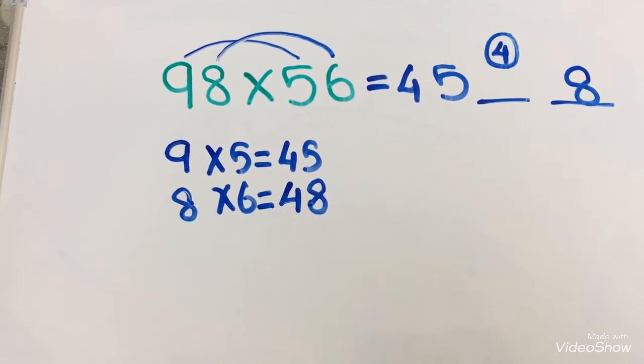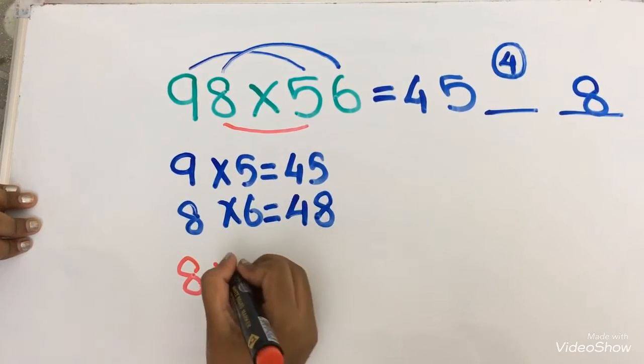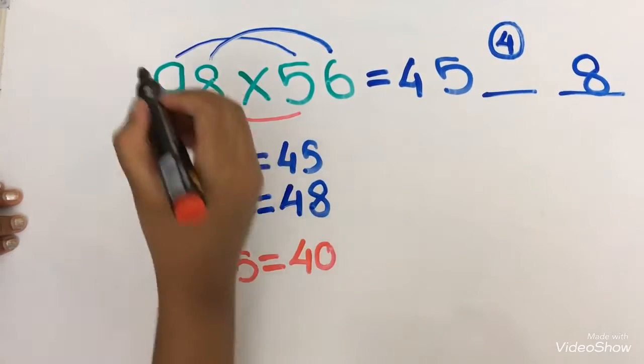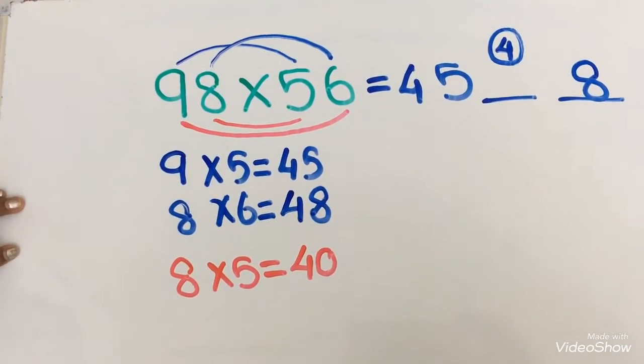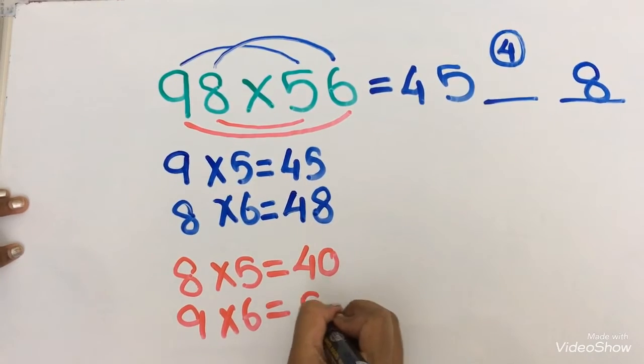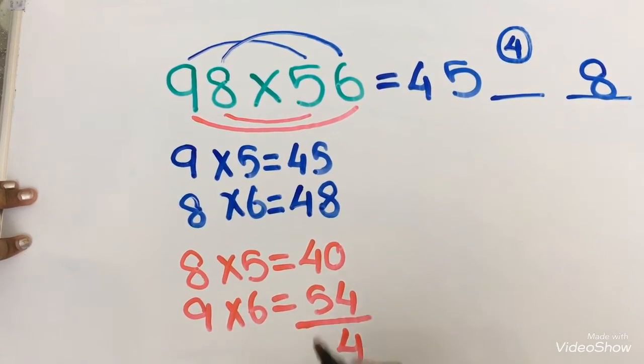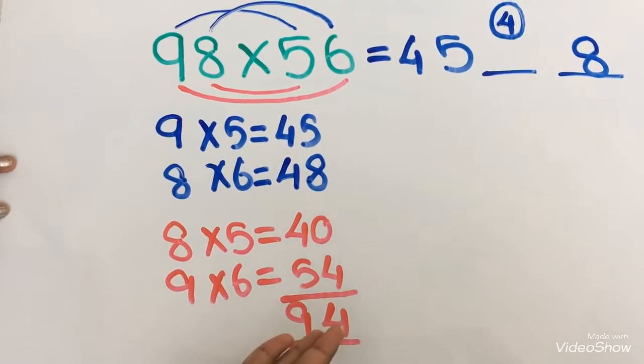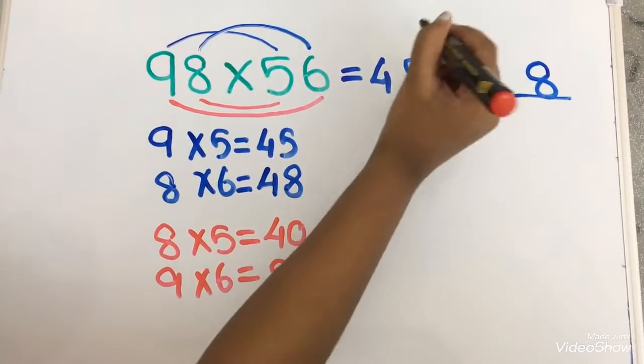Now we are going to multiply the middle numbers. 8 into 5. 8 into 5 is 40. 9 into 6 equals to 54. Now we are going to add it. 0 plus 4 equals to 4 and 4 plus 5 equals to 9. So, the answer is 94. Now, I am going to take this 4 and write it over here. This 9 I will write it as a reminder.